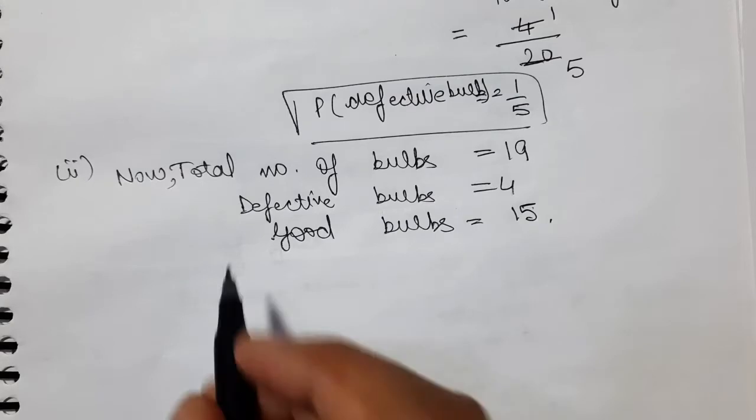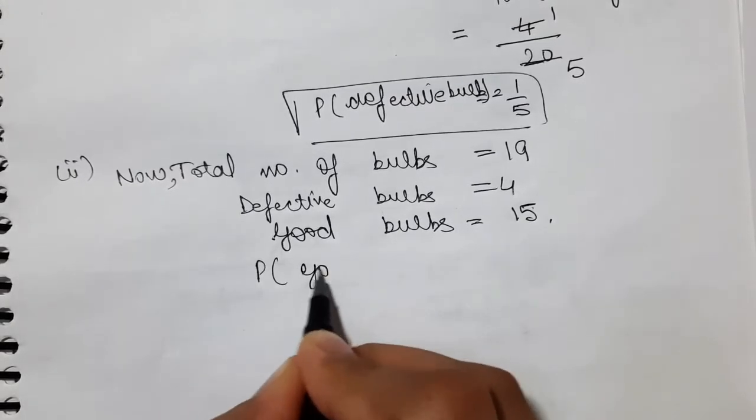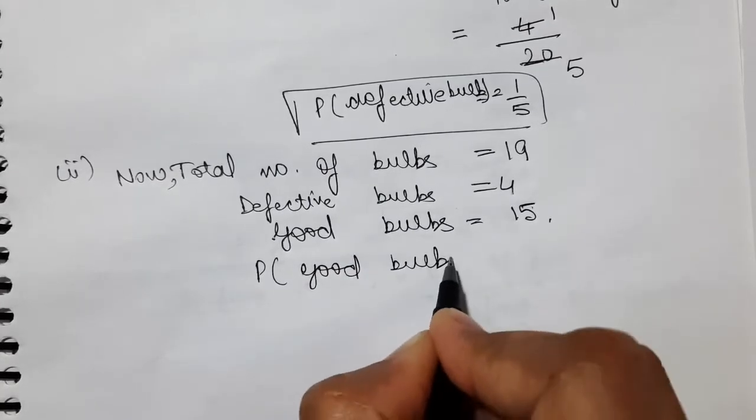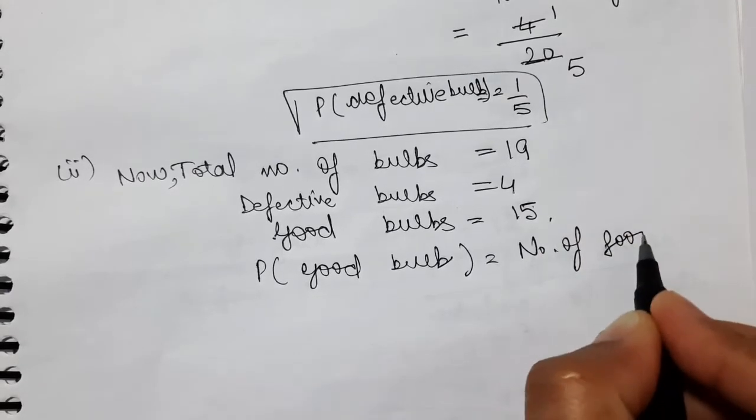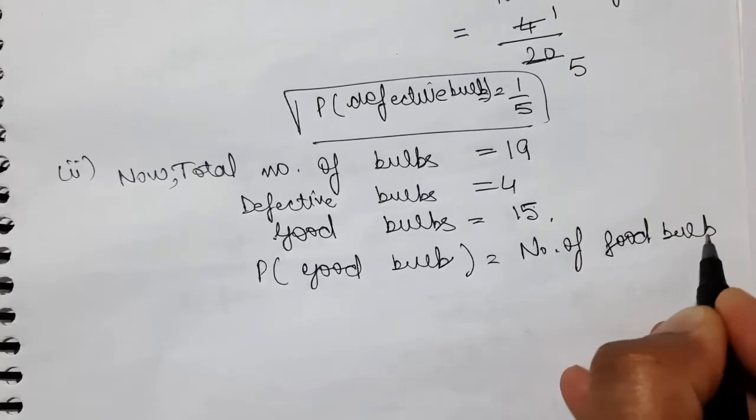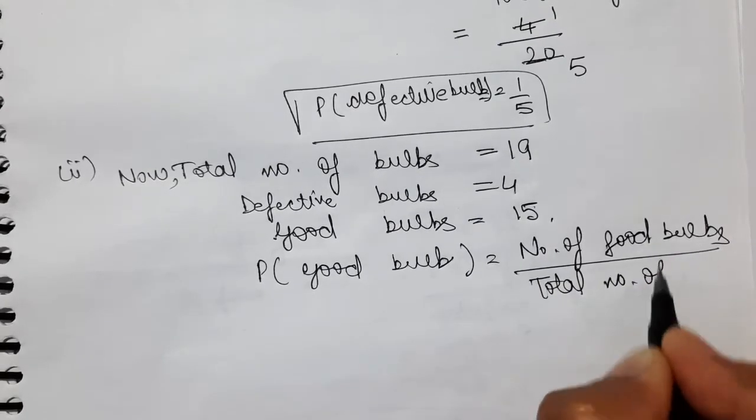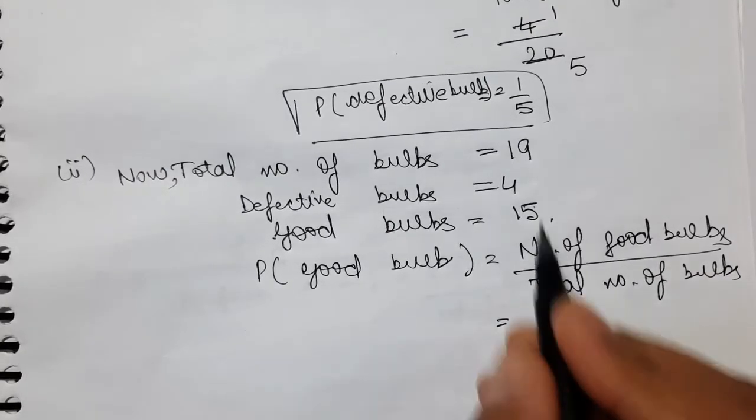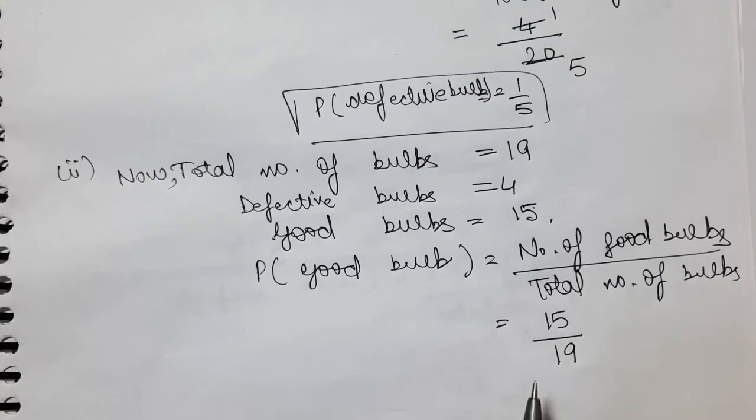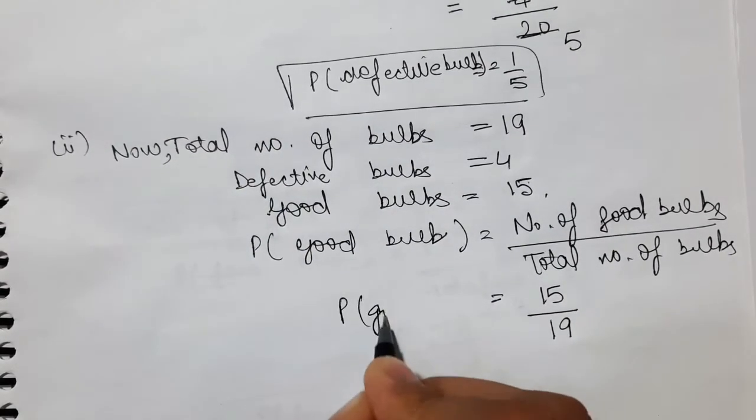To ab iski probability hume find out karni hai. Probability of getting a bulb not defective, good bulb nikalne ki probability hume puchi hai. To good bulb hamare paas aega, number of good bulbs divided by total number of bulbs. To ab hamare paas good bulbs kitne hain? 15 hain. Aur total bhi hamare paas 19 hai, kyunki ek bulb jo draw hua hai usko replace nahi kiya gaya, means usko wapas lot mein nahi shamil kiya gaya. So this is the answer of the second part of this question, probability of getting a bulb that is not defective.